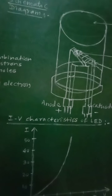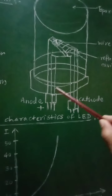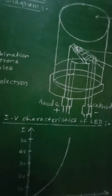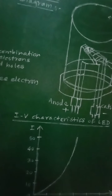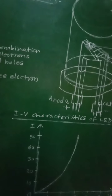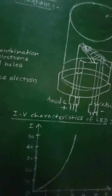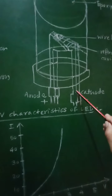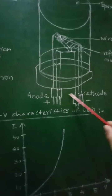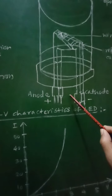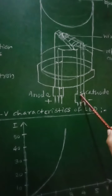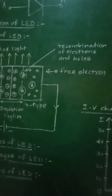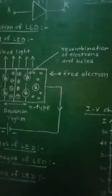The metal electrodes attached on either side of the PN junction serve as contacts for the external electrical connections, allowing the LED to be connected in the external circuit.